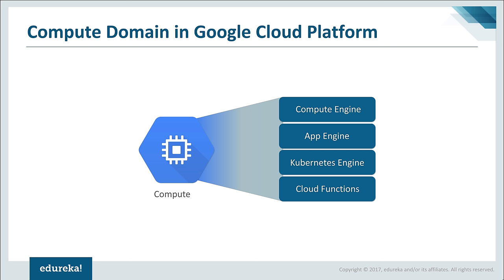Let's talk about the compute domain first. The compute domain has four kinds of services: Compute Engine, App Engine, Kubernetes Engine, and Cloud Functions. Compute Engine is nothing but a raw server. If you buy a new server, the first thing you do is install an operating system — you choose between Linux or Windows, then choose the version. Once you've installed it, you can install further software to make it a web server or use it for some other purpose.